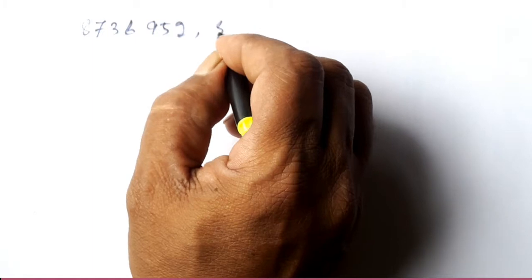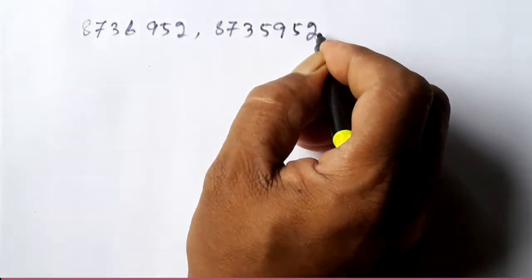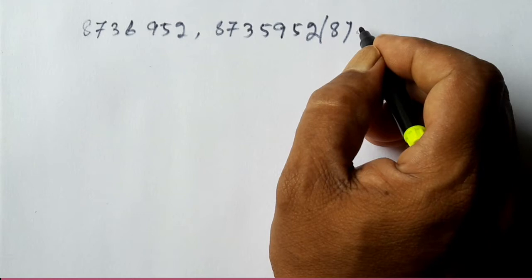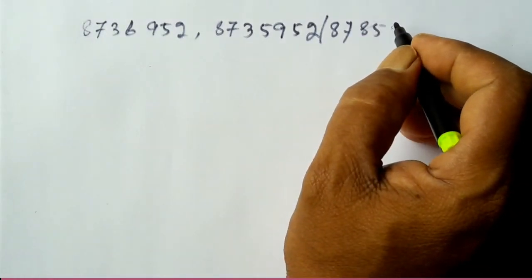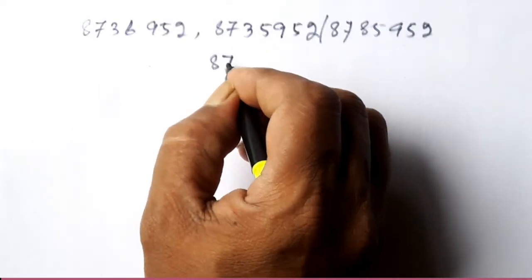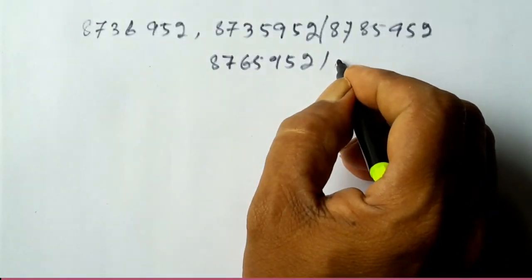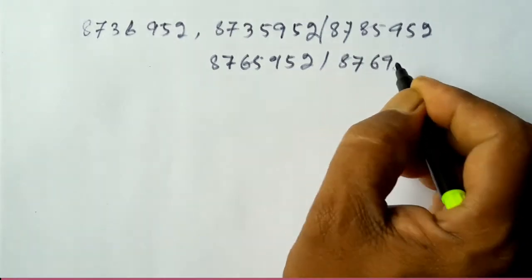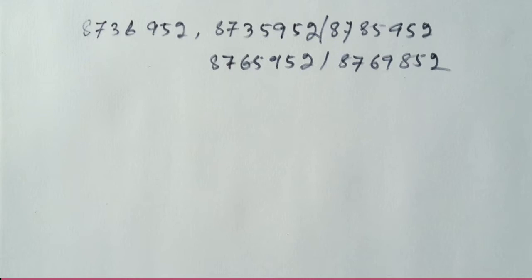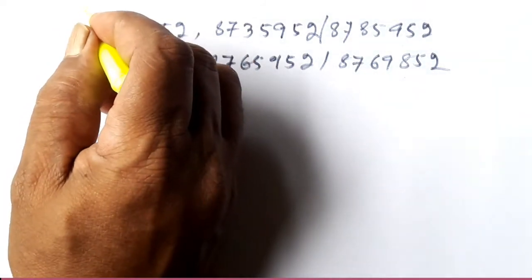The second number is 8735952. The third number is 8785952. The fourth number is 8765952. The fifth number is 8769852. There are 5 numbers. First, we count the digits: in the first number there are 7 digits, and all five numbers have 7 digits each.